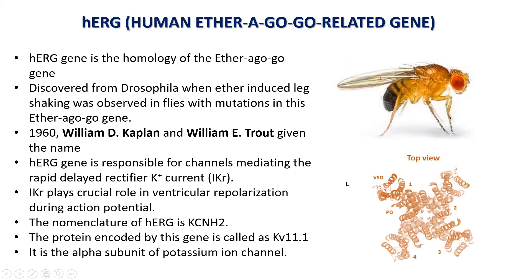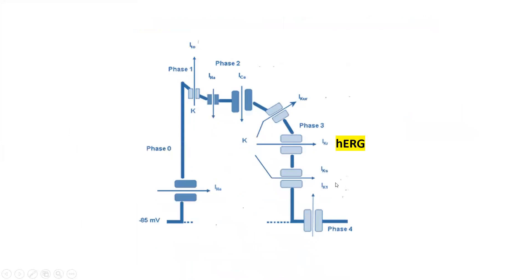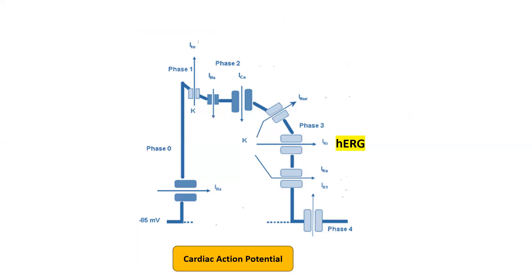This is the top view of the structure of the HERG gene. Now before discussing the role of HERG gene, let's see how the action potential works. This is the action potential observed in the cardiac myocyte, and this action potential is considered the electrical basis for the heartbeat, which starts from the pacemaker cell and is transmitted to the atrial ventricular muscle and finally to cardiac myocytes.